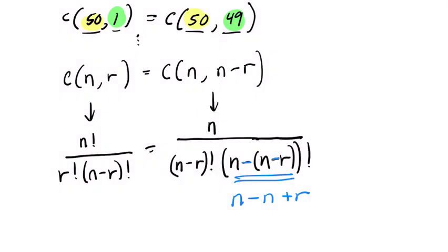And here, n minus n plus r, what is that? Well, it's 0 plus r, or just r, right? So this equals r.